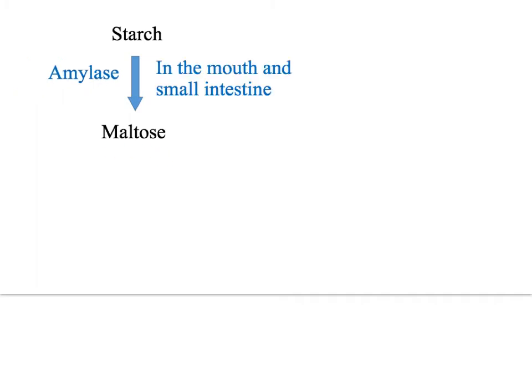Where does this digestion take place? The amylase that was produced in the saliva gland means digestion occurs in the mouth, and starch is also digested in the small intestine. The amylase that was made in the pancreas is secreted into the small intestine.